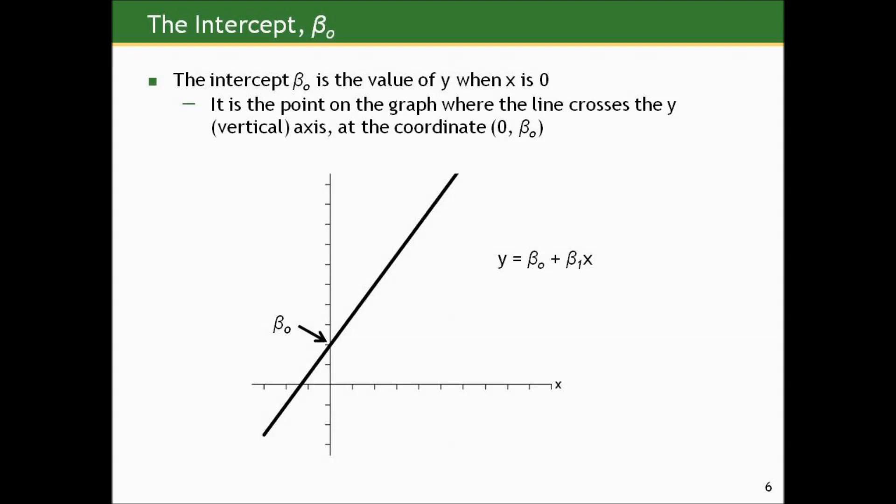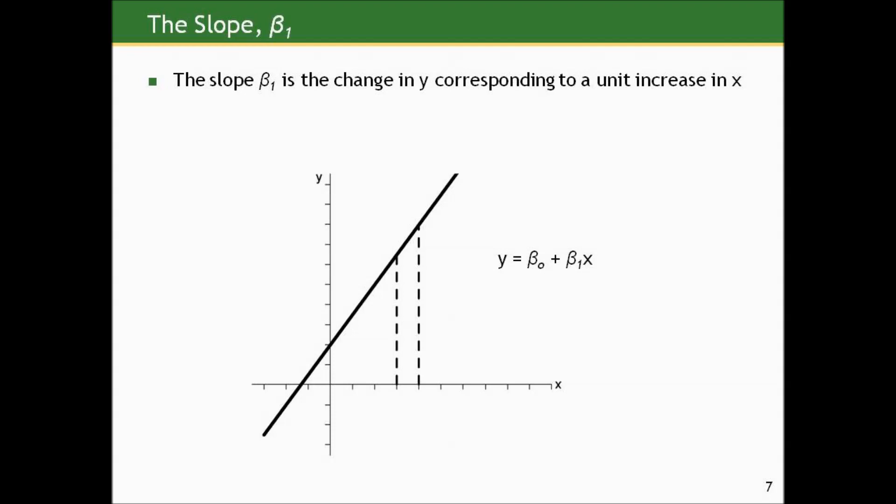The intercept, now called beta 0 or β0, is the value of y when x is 0. It is the point on the graph where the line crosses the vertical axis at the coordinate x equals 0 and y equals β0. Here's an example of the y-intercept on a two-way graph.